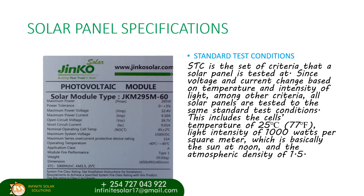The standard test conditions are a set of criteria that a solar panel is tested at, since current and voltage change based on temperature and intensity of light. All solar panels are tested to the same standard conditions: the cells have to be at a specific temperature of about 25 degrees centigrade or 77 degrees Fahrenheit, a light intensity of about 1000 watts per square meter — basically the sun at noon — and an atmospheric intensity of 1.5.